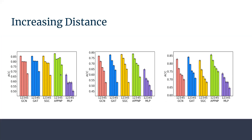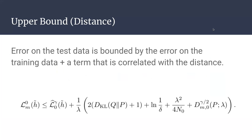Moving to distance bias: the distance between an unlabeled node and a labeled node influences the accuracy of the label given to the unlabeled node. The most interesting contribution of this paper is a closed-form for the error on the unlabeled node. Simply stated, the error on the test data is bounded by the sum of the error on the training data plus a term correlated with the distance. This means distance is directly proportional to the error — a very valuable finding.